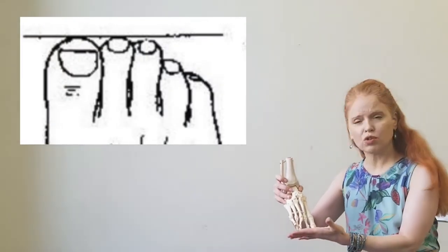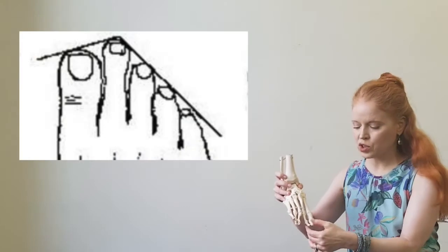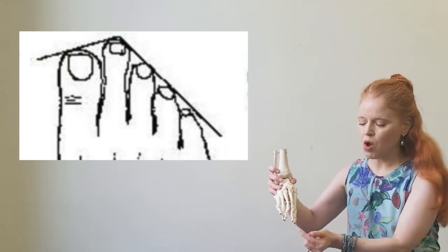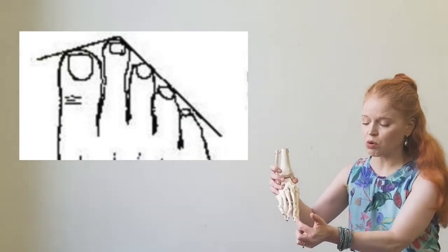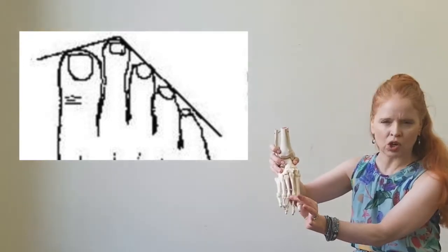The ideal foot for pointe has a sturdy metatarsal and at least three or more toes the same length. For the Greek foot type or the Morton's toe, the second toe is longer, the first toe is shorter, and the rest of the toes taper off after that, which really means that the metatarsals are in line.